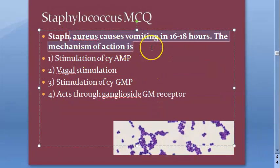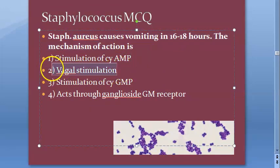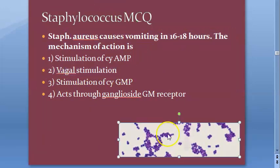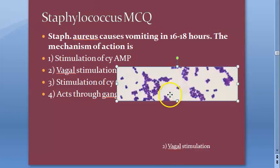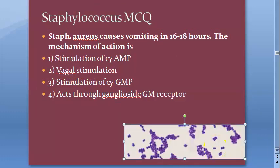Staphylococcus aureus causes vomiting in 16 to 18 hours. The mechanism of action is vagal stimulation. Look at the answer here — vagal stimulation.